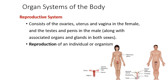The reproductive system is really the only system in your body that is not necessary for life. You don't need a reproductive system in order to be alive, but you do need one in order to procreate. These are the gonads — either ovaries or testes depending on whether you're talking about a female or male — and then the associated secondary sex characteristics.